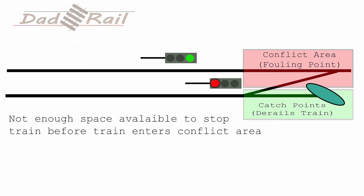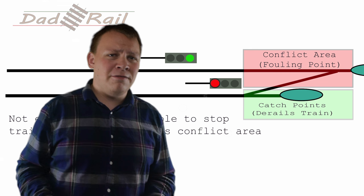This may sound all very dramatic, but it's important to emphasise that derailers and catchpoints are only typically found in low-speed areas, such as yards, stations, and sidings.